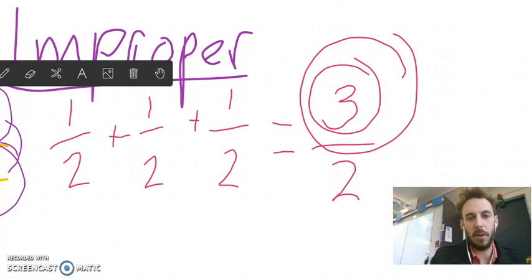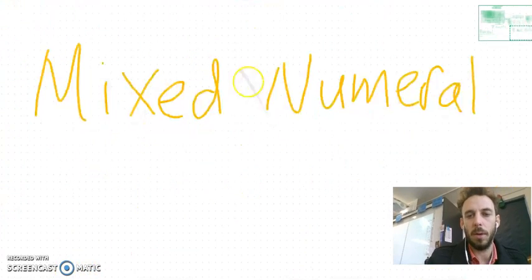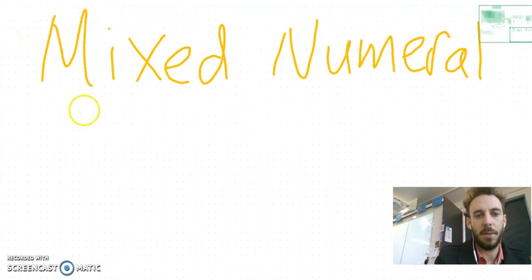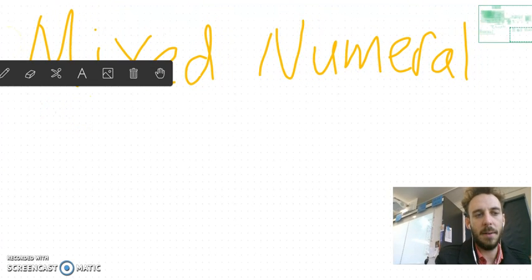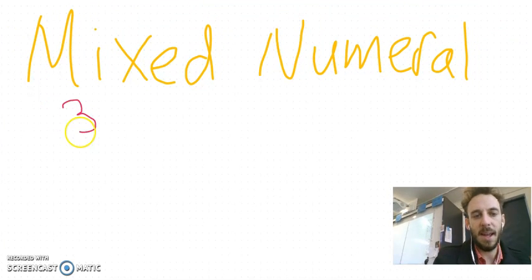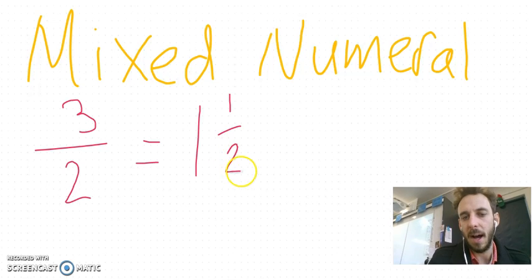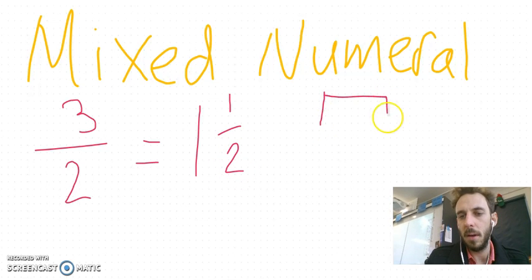You can convert an improper fraction though. You can change it to a mixed numeral. Let's pick on the same one. Let's say I have three halves, which is an improper fraction. That's basically the same as having one whole and one half. Because if I have, let's say I get a Mars bar. Someone cuts it in half. I get half. Then I get half.